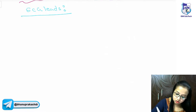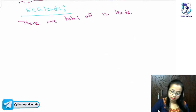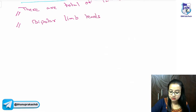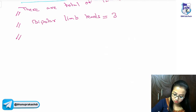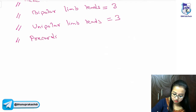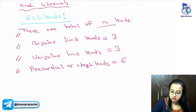ECG leads — there are a total of 12 leads. They are not all similar. There are bipolar limb leads, which are three in number. Then we have unipolar limb leads, which are also three in number. And then we have the precordial or chest leads, which are six in number. All together there are 12 leads.